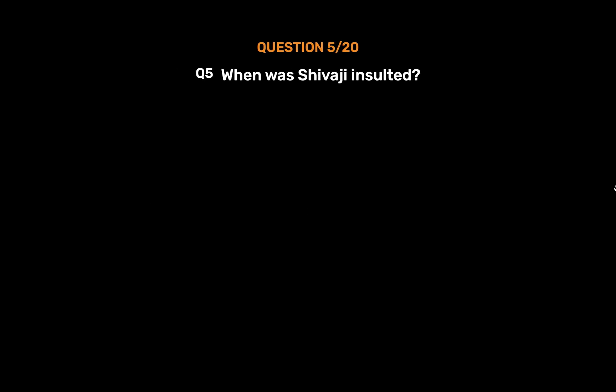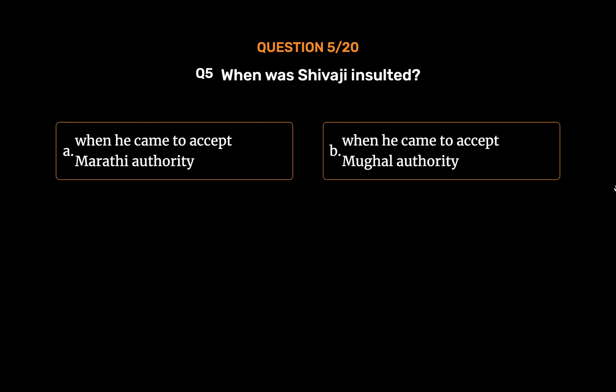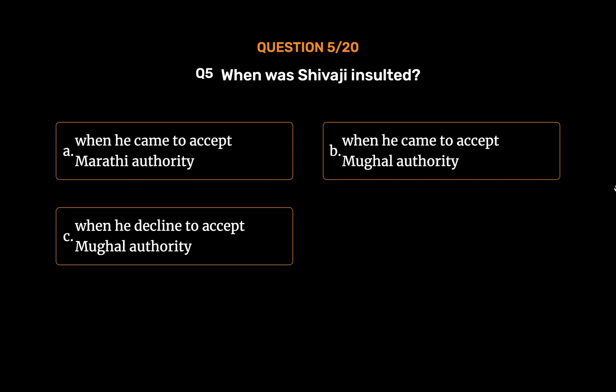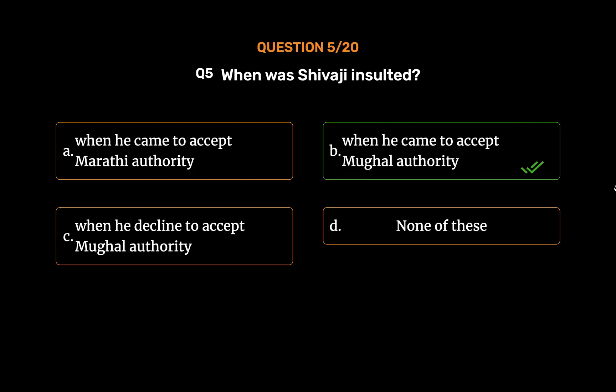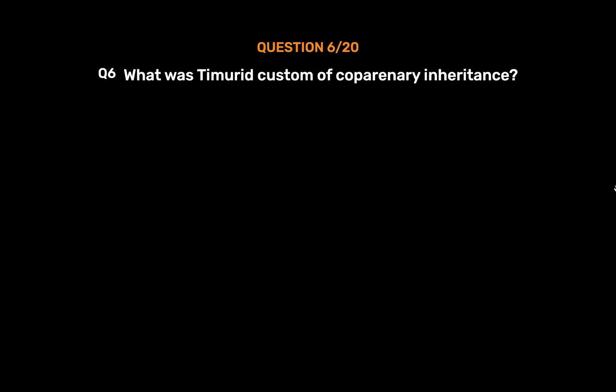Question 5: When was Shivaji insulted? Option A: When he came to accept Marathi authority. Option B: When he came to accept Mughal authority. Option C: When he declined to accept Mughal authority. Option D: None of these. The correct answer is Option B, when he came to accept Mughal authority. Shivaji was insulted by Aurangzeb when he came to accept Mughal authority.